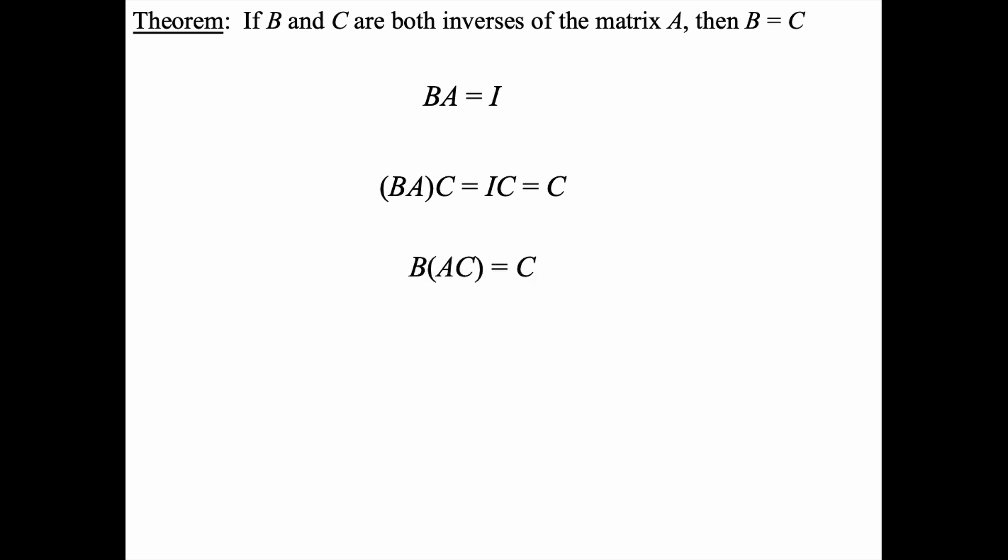But now by the associative property, I can group A and C on the left side of the equation and instead say that B times AC equals C.